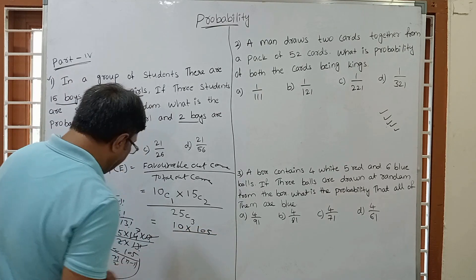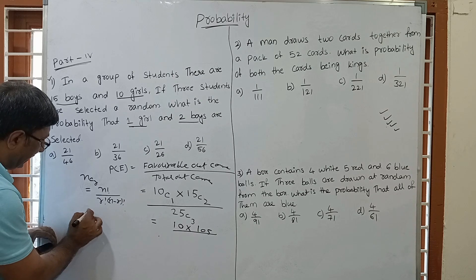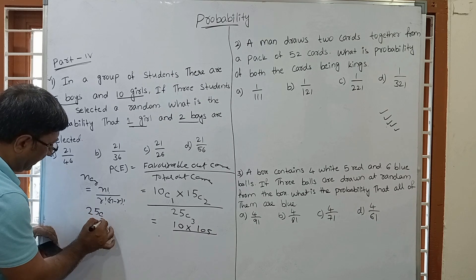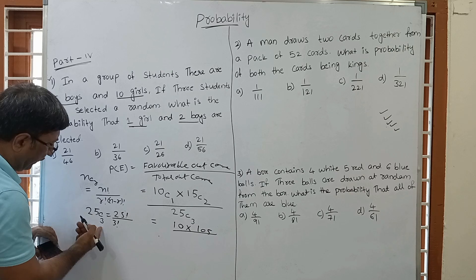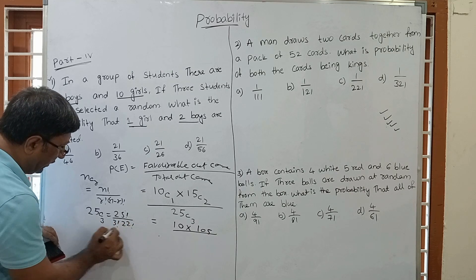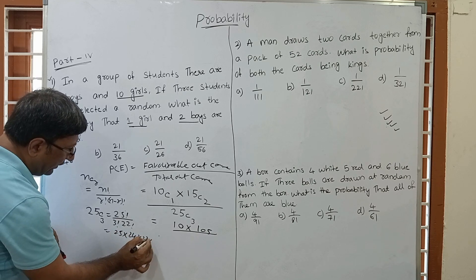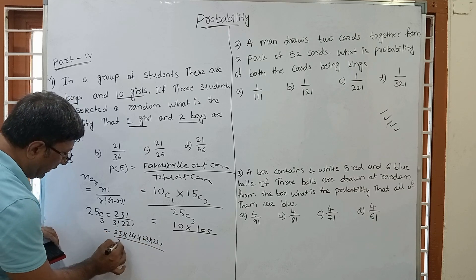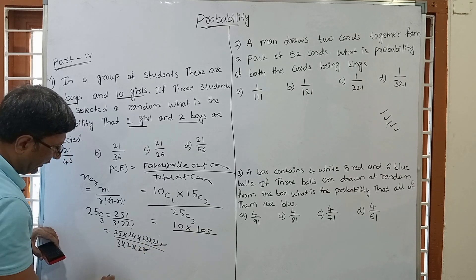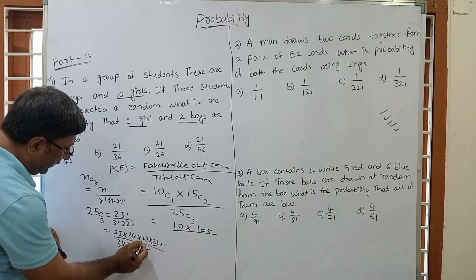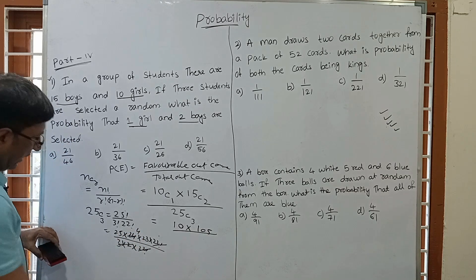Now divide by 25C3. Applying the formula: 25C3 = 25! / (3! × 22!) = (25 × 24 × 23 × 22!) / (3! × 22!) = (25 × 24 × 23) / 6. Since 3! = 3 × 2 × 1 = 6. So 25C3 = (25 × 24 × 23) / 6.